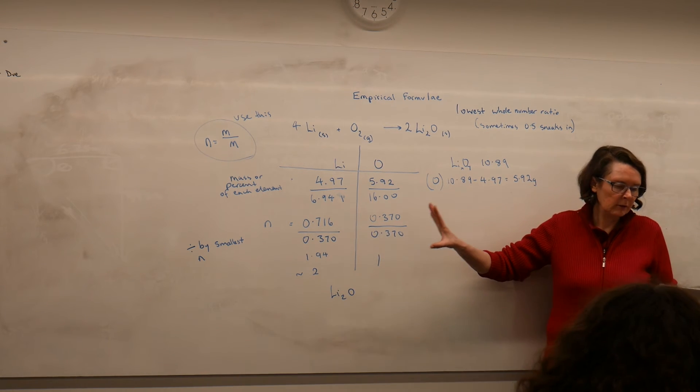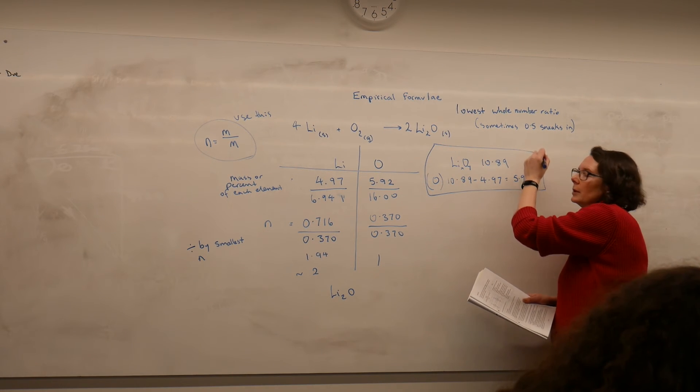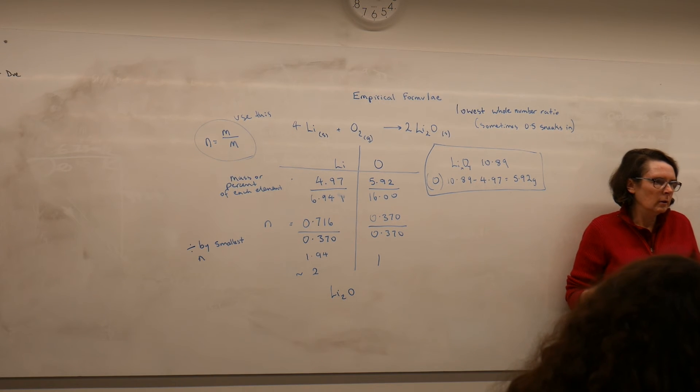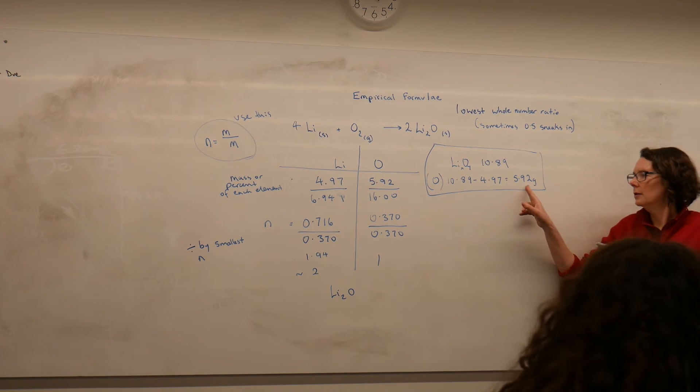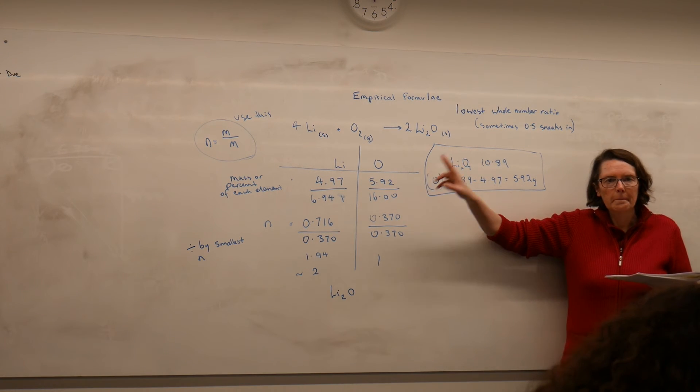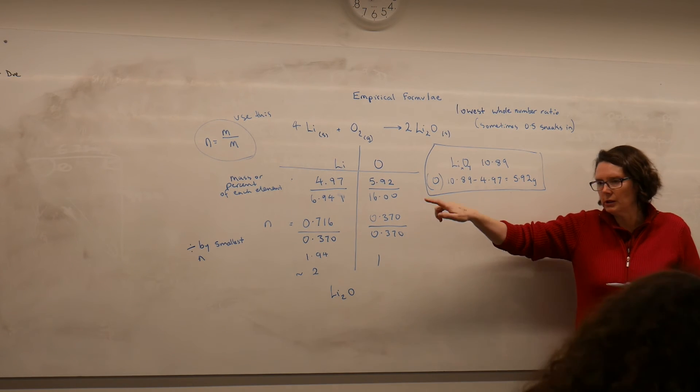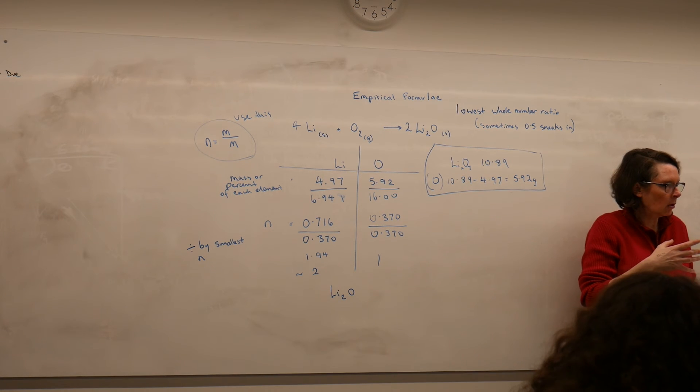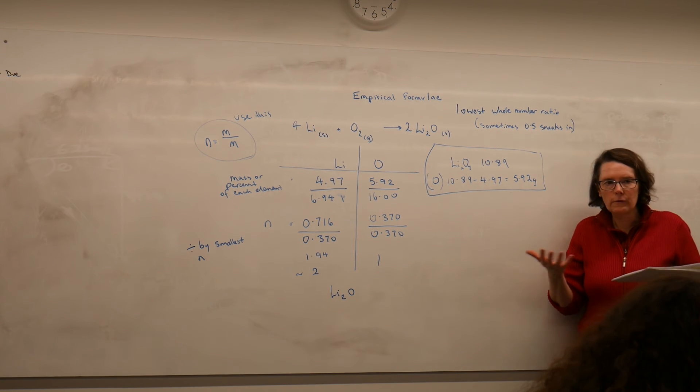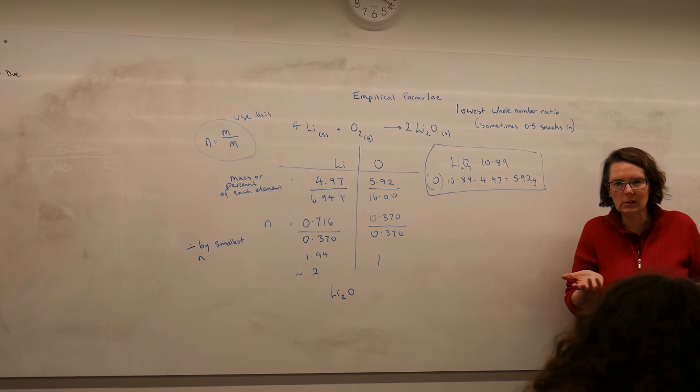Now this is a pretty straightforward, simple one. This step here does make it a little bit more complicated, that you have to find the mass of the oxygen—you weren't just given it, you had to find it. But this was still quite simple because there's only 2 elements. It can be a little bit more difficult if you've got 3 or 4 elements, and one of them wasn't given. Then sometimes students forget to find that missing mass and they calculate without it.